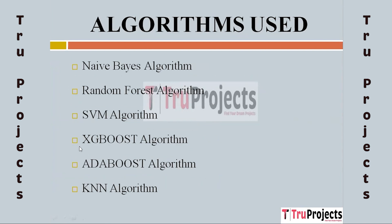These are the algorithms used in the project. The first algorithm is the Naive Bayes algorithm. Its probabilistic approach simplifies classification tasks, aiding in decision-making for attack identification and adding diversity to the project's algorithmic toolkit. The second algorithm is Random Forest, which demonstrates high accuracy due to its ensemble nature, aggregating multiple decision trees to improve prediction quality, making it suitable for intricate attack detection in IoT networks.